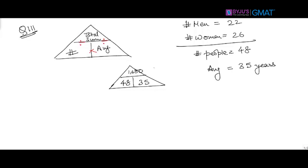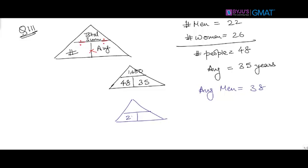1680 is the total sum of all the ages of 48 people. The question also mentions that the average age of men is 38. Using the average triangle for men: the number of men is 22, the average age is 38, so to find the total sum of the ages of men, multiply 22 by 38, which gives 836.